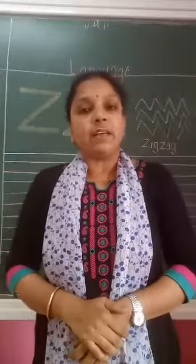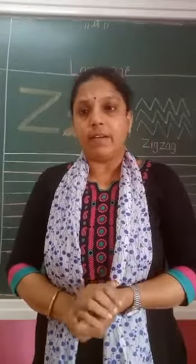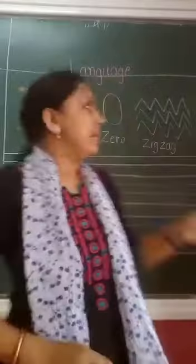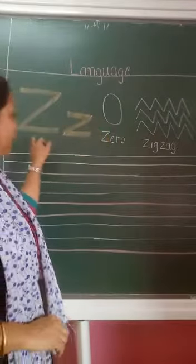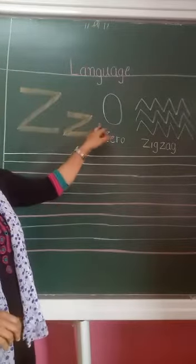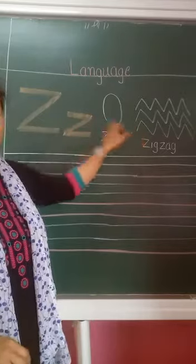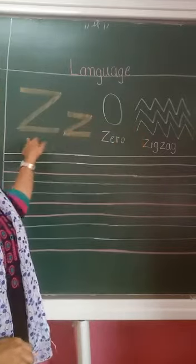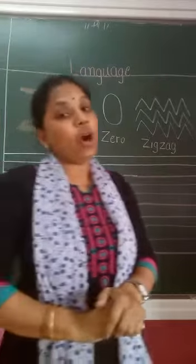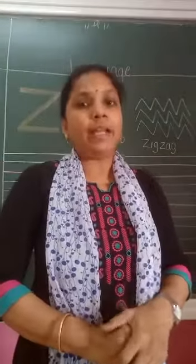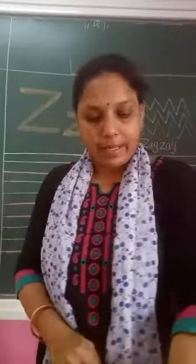Z says Z. Z for zero. Z for zigzag. Now I will show you how to write alphabet Z in four lines.